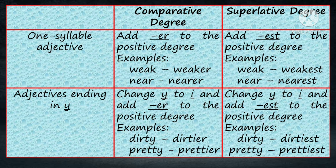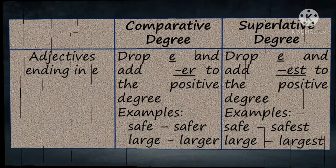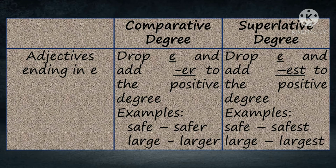For example, dirty becomes dirtier and dirtiest. Pretty becomes prettier and prettiest. For adjectives ending in -e, we simply drop the e and add -er to form the comparative degree, and add -est to form the superlative degree.